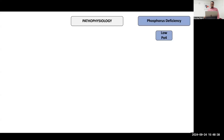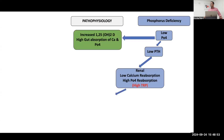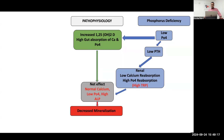Regarding pathophysiology: if phosphorus is low, PTH will be low, renal calcium absorption will be reduced, and there will be high phosphorus resorption — so TRP will be high. Low phosphate also triggers 1-alpha hydroxylase activity, raising calcitriol, which increases gut absorption of calcium and phosphorus. The net effect is normal calcium, low phosphorus, and high ALP. Therefore, calcium levels are not independently reliable, as they may appear normal due to increased calcitriol action, ultimately leading to decreased mineralization and MBD of prematurity.